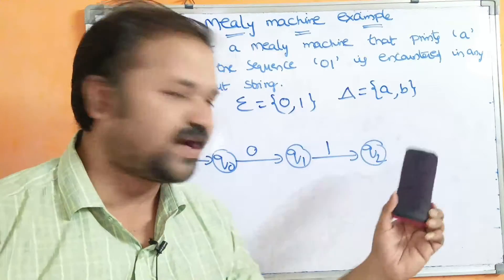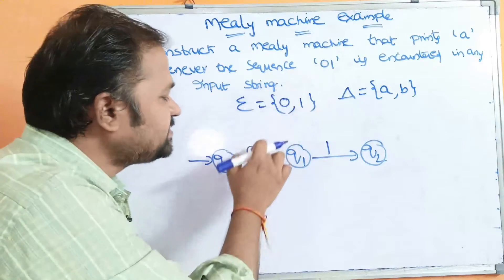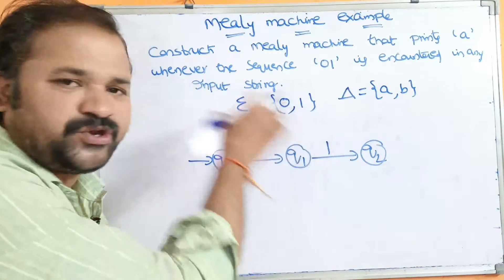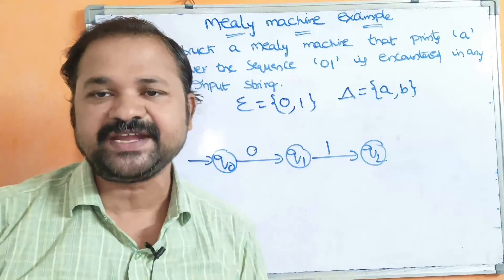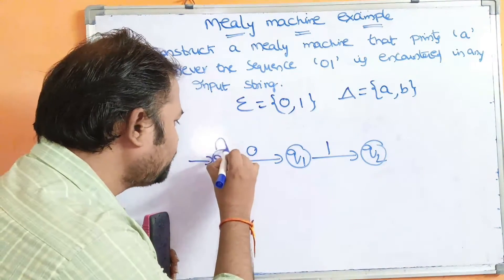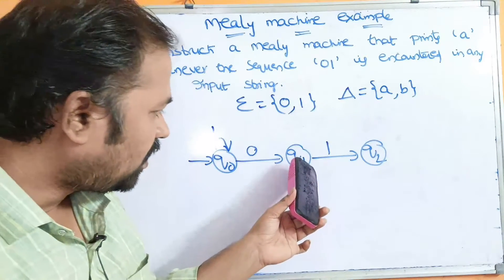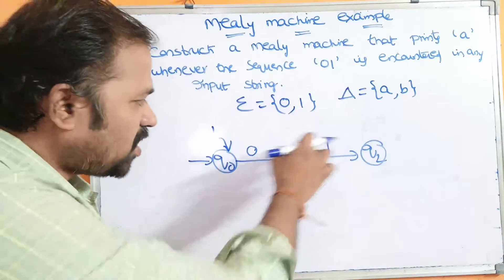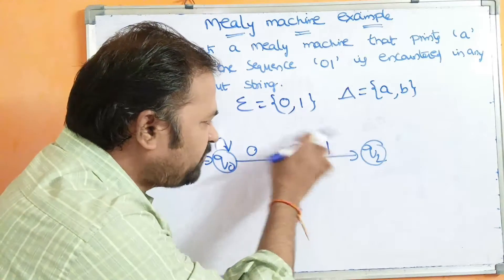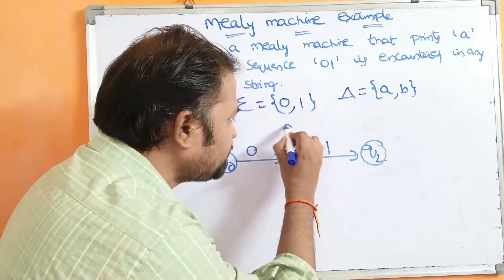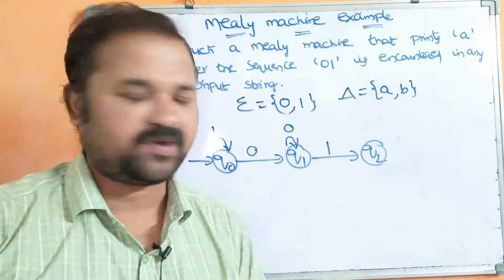We also need to apply 0 and 1 on Q2. Let us apply 1 on Q0. Since the sequence is 0,1, before the sequence we can have any number of 1s — there is no constraint on that. So Q0 on 1 is a self-loop. Next, we need to apply 0 on Q1. Because already 0 was seen, before the 1 in the sequence we can have any number of 0s, so Q1 on 0 goes back — there is no problem with that.